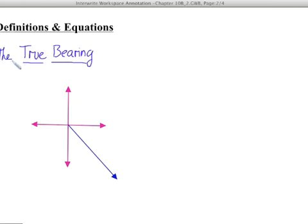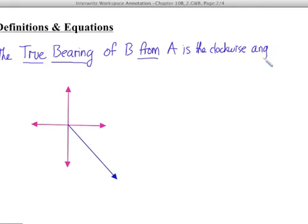The true bearing of point B from point A, and note the terminology here, 'from', this is really important, is the clockwise angle between the line AB and the north line, which we know by convention always points straight up.